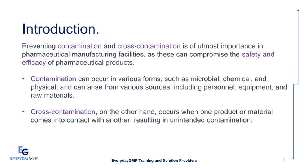Introduction. Preventing contamination and cross-contamination is of utmost importance in pharmaceutical manufacturing facilities, as these can compromise the safety and efficacy of pharmaceutical products. Contamination can occur in various forms, such as microbial, chemical, and physical, and can arise from various sources, including personnel, equipment, and raw materials. Cross-contamination, on the other hand, occurs when one product or material comes into contact with another, resulting in unintended contamination.